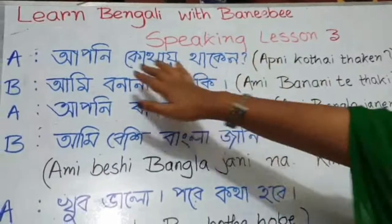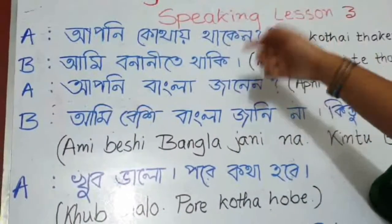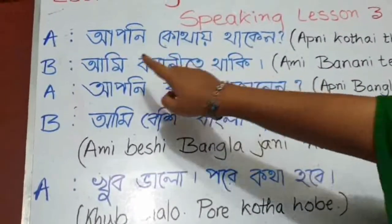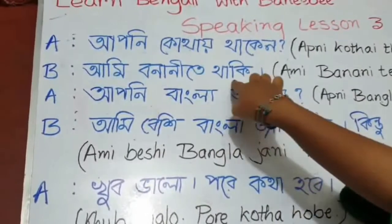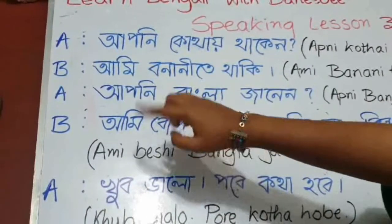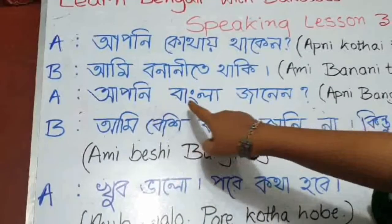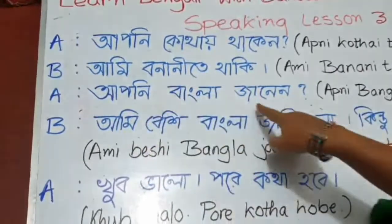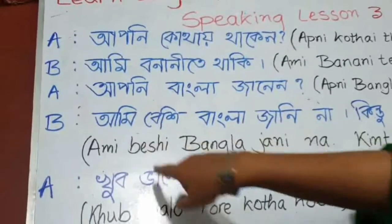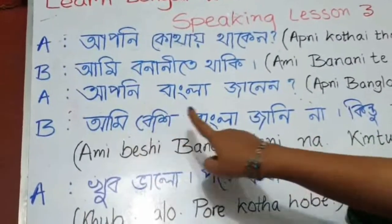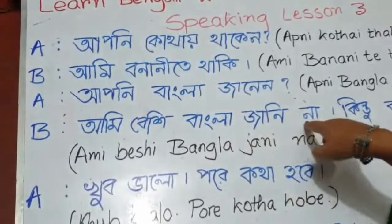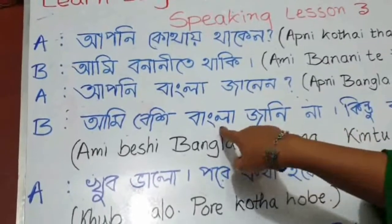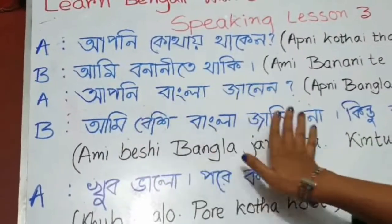This person is replying: Ami Bonanite Thaki — that means I live in Bonanite. This person is asking: Apni Bangla Janen? — Do you know Bangla? This person is saying: Ami Beshi Bangla Jani Na — I do not know much Bangla.